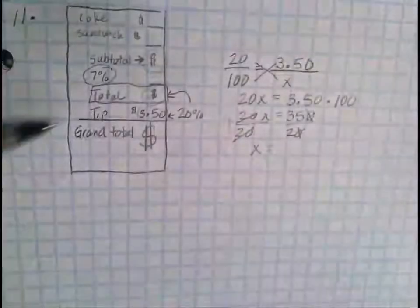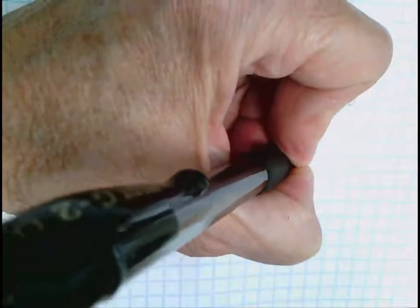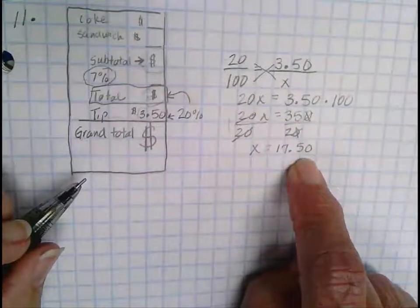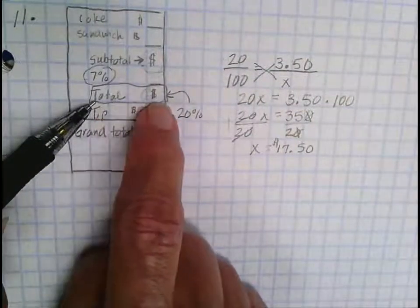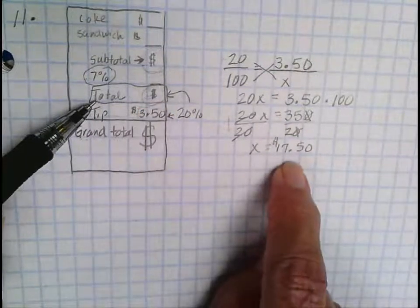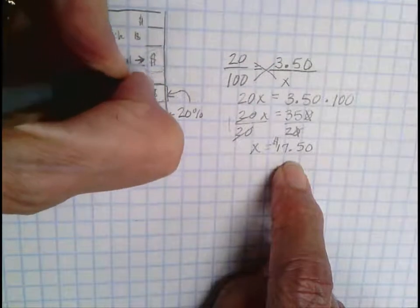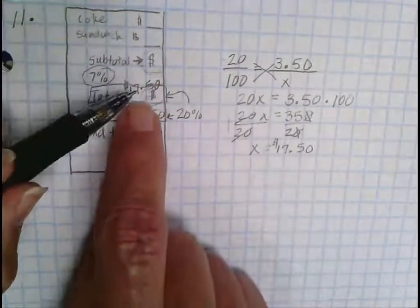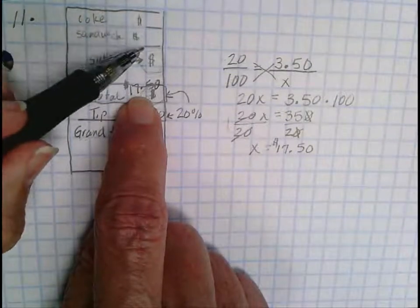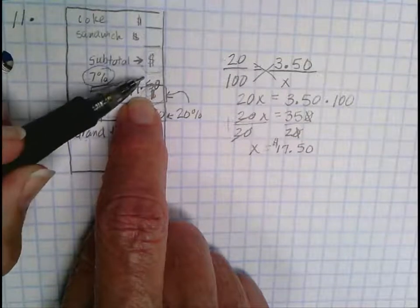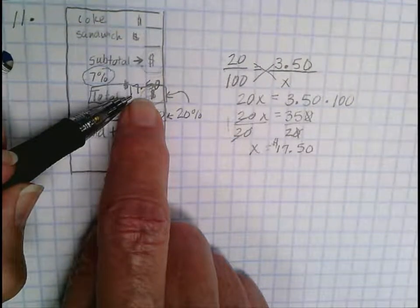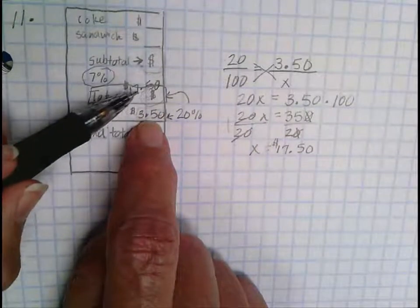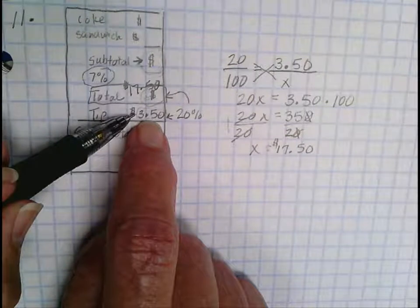17 and 5 tenths. Now because I'm dealing with money, I know that I need a zero here. Because in our money system, there are two decimal places. So this means that my total right here was $17.50. After they added in the cost of what I ate and then they added their tax, the total up to that point was $17.50. Then I figured out what 20% of this amount was, and I got $3.50.